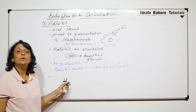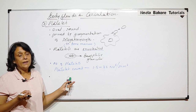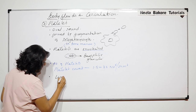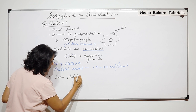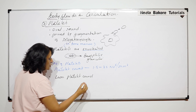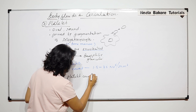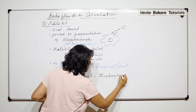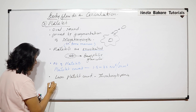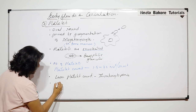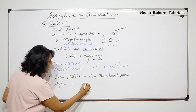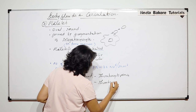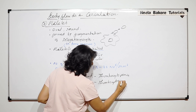If the platelet count has increased, then we give it a term, and if it is reduced, it also has a term. The lower platelet count we call thrombocytopenia, and if the platelet count is increased, we call it thrombocytosis.